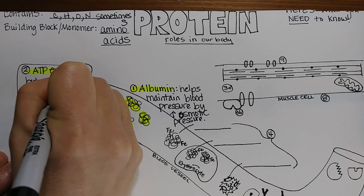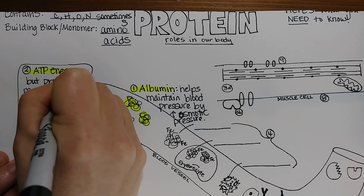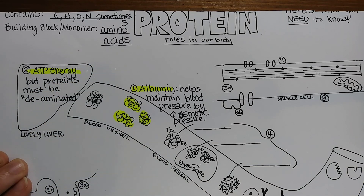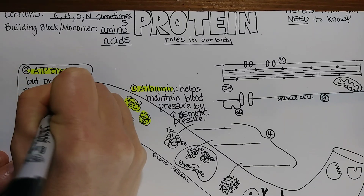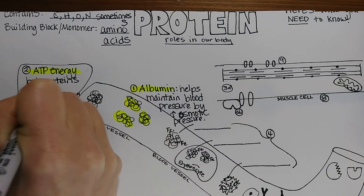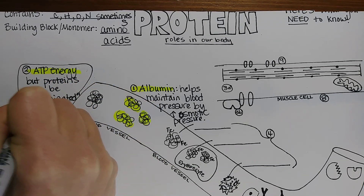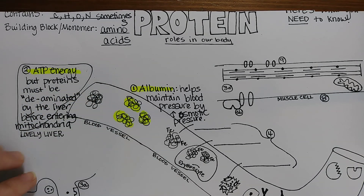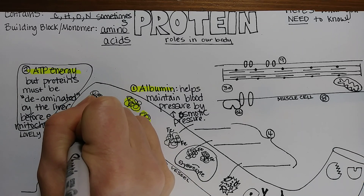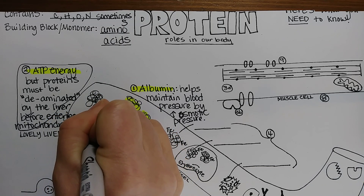Deamination — 'de' meaning to undo something, and 'aminated' meaning taking off the amine group. So the proteins have to be deaminated by the liver before entering the mitochondria. The mitochondria can't make ATP from nitrogen; it just wants the carbons and collects all of the electrons.